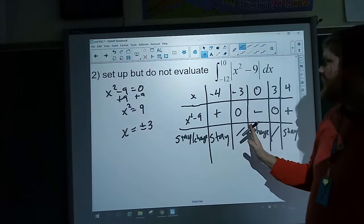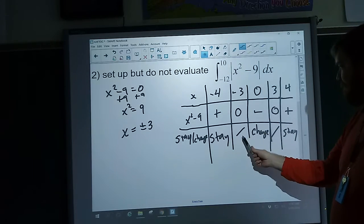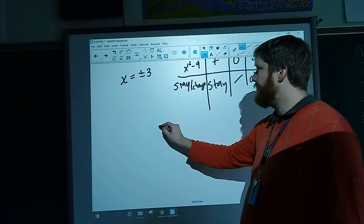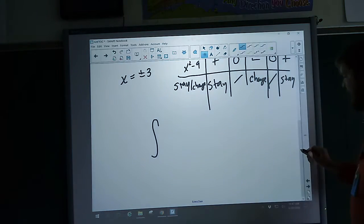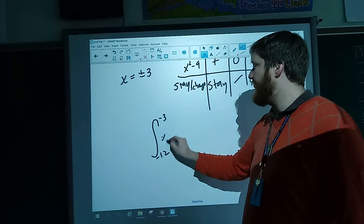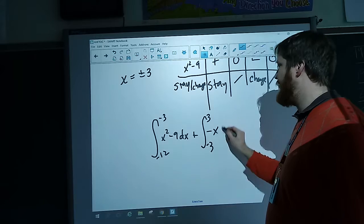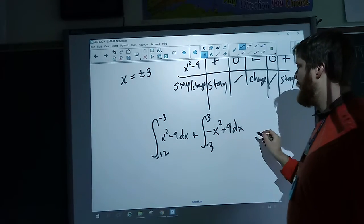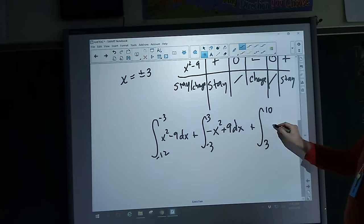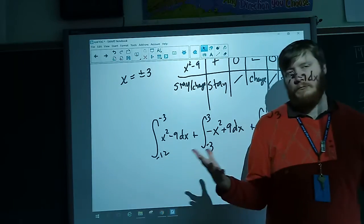So we notice that to the left of negative three, or less than negative three for x values, we just are left with x squared minus nine. But in between, we have to change this. So our integral would be - let's see, negative 12 to negative three, x squared minus nine, because it's not changing, dx, plus negative three to three. This one is changed, so we need to use the opposite. And our final one, three until 10, x squared minus nine, dx. This integral would fit our situation.